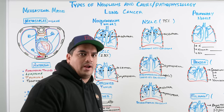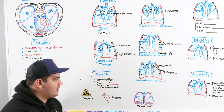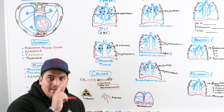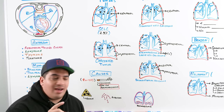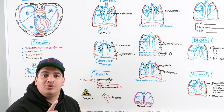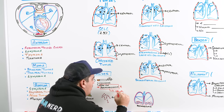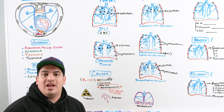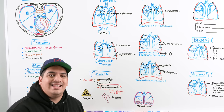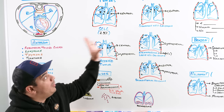Regarding causes of lung cancer, cigarette smoking is the most common cause — 80 to 90% of cases are due to cigarette smoking. There is one important exception: adenocarcinoma has no association with smoking. It is more likely associated with genetics, a specific mutation, or a family history of that mutation.